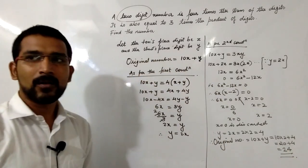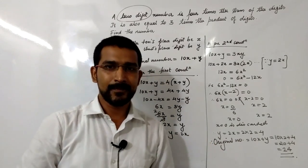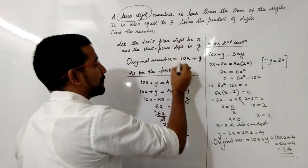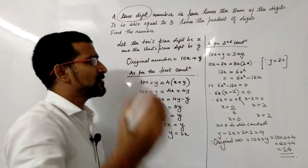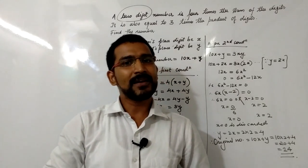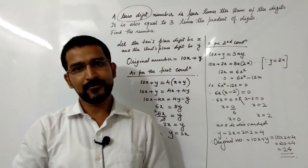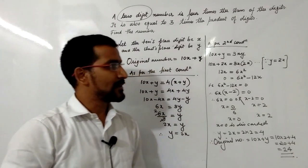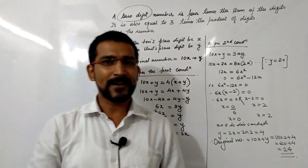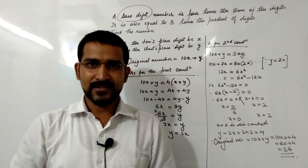The two-digit number we found is 24. This is how we can solve any word problem based on two-digit numbers. Many students find difficulty in forming these numbers. In many examples, you get that if a number is added, the two-digit number gets reversed — we will take examples of that type in the next video. Try to solve 4 to 5 questions of this type so you will become more confident. Thank you.